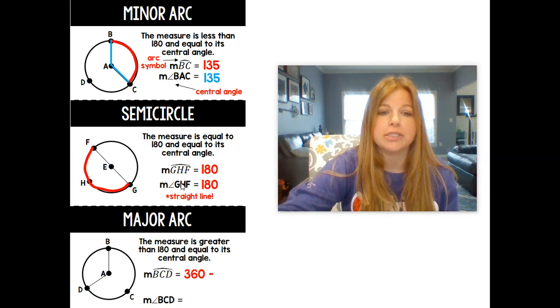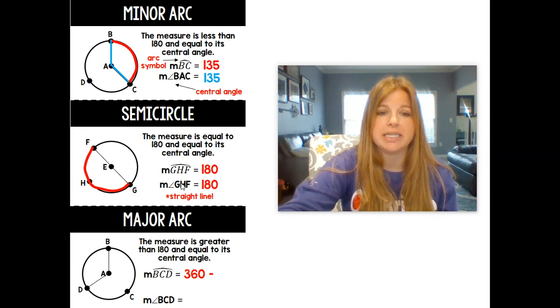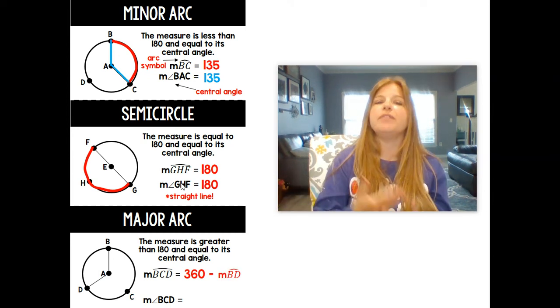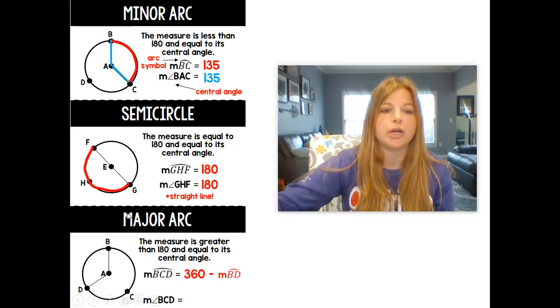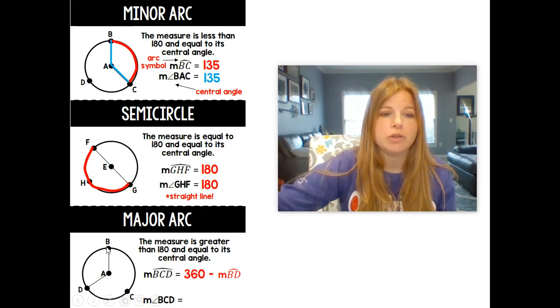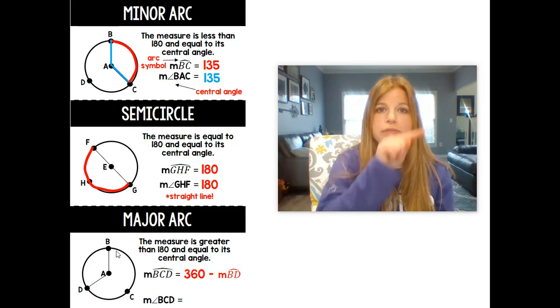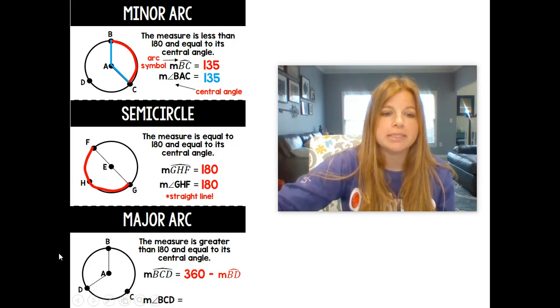A major arc is greater than 180 degrees and equal to its central angle. And the way we figure out the measure of a major arc is we look at B, C, D, this entire arc. And really what we do is we do 360, the measure of all the arcs added up, subtracted by the other arc that's left over.